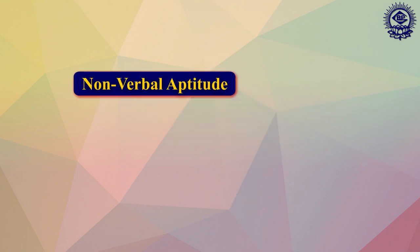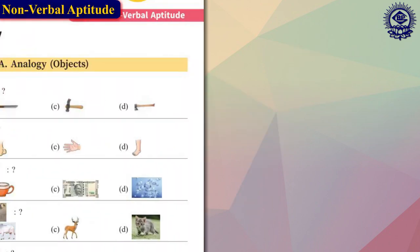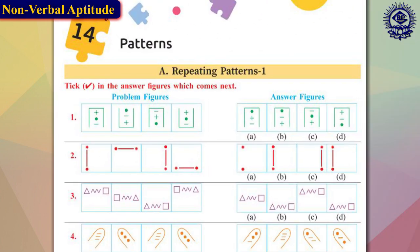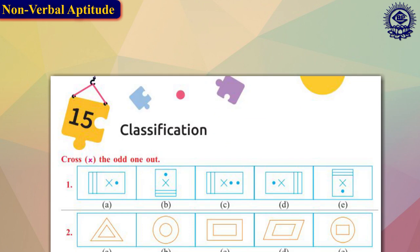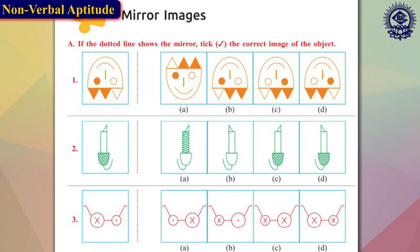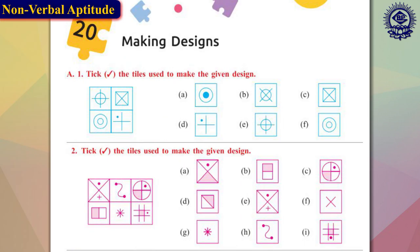Non-verbal aptitude: non-verbal reasoning is problem solving using pictures and diagrams. It tests the ability to analyze visual information and solve problems based on visual reasoning. Often, children are asked to look at a series of diagrams and find the odd one out or the next in the sequence.